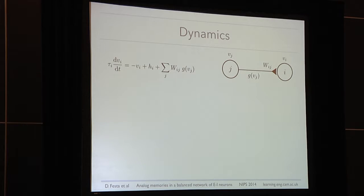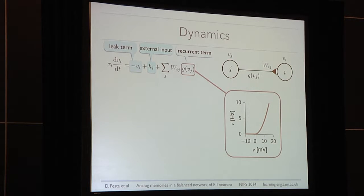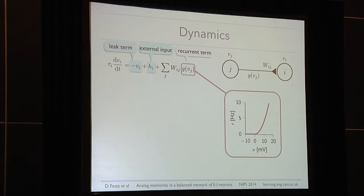I will describe first the dynamics, then the memories, and then move on to the algorithm. The dynamics is a recurrent neural network where neurons are described by internal voltage V. There is a leak term, a constant external input, and a recurrent term containing presynaptic weights and presynaptic rates. The rates are a nonlinear function of voltages given by a threshold-quadratic gain function. Notably, this function has no saturation, meaning the rate can in principle go to infinity. Stability in our system is not achieved by limiting single units but is rather the product of network interactions.